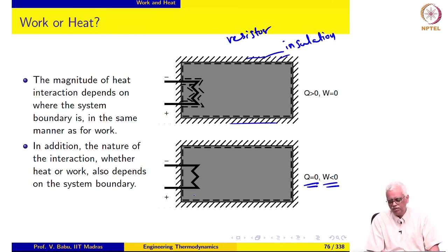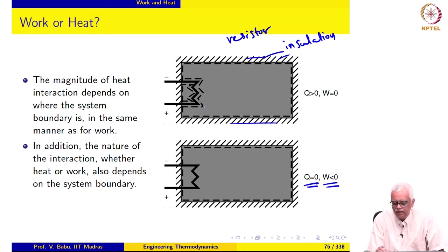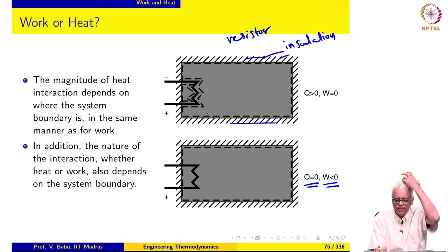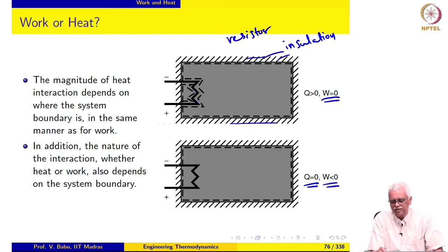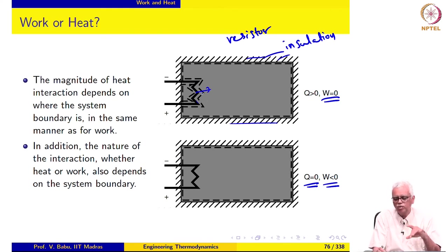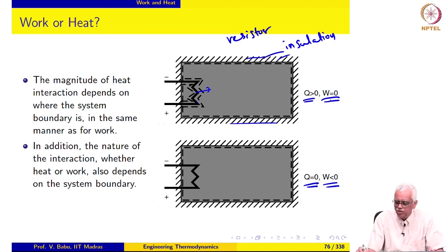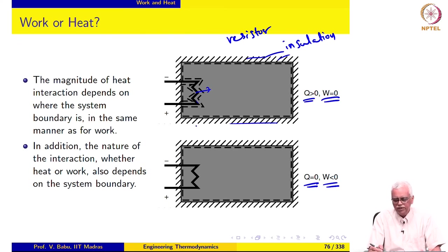Alternatively, we can define a more complicated system that includes just the gas and excludes the resistor. For this system, there is no work interaction because no part of the system boundary deforms, there is no shaft work, and no electrical work — so W is zero. On the other hand, the ohmic heating from the resistor is transferred to the system, so what crosses the system boundary is heat, and Q is positive since heat is being supplied. This demonstrates clearly that depending on where we draw the system boundary, something may be classified as heat or work.